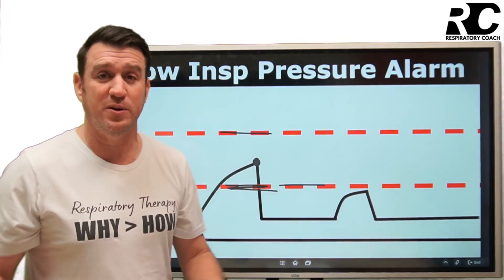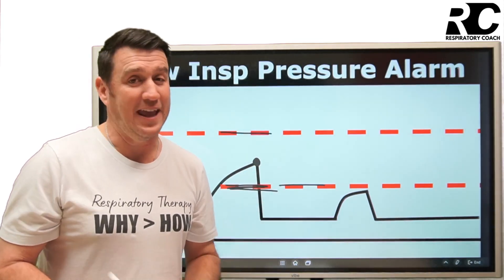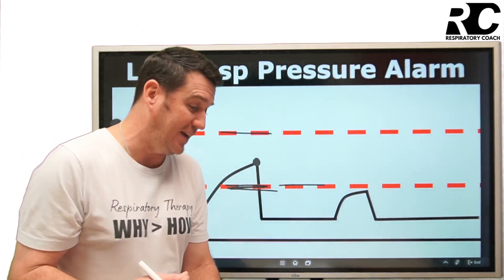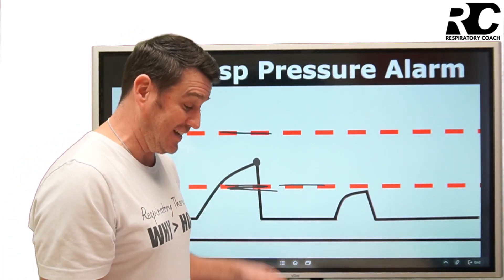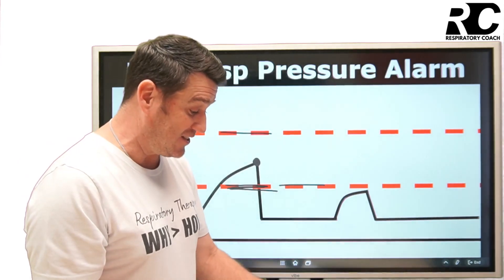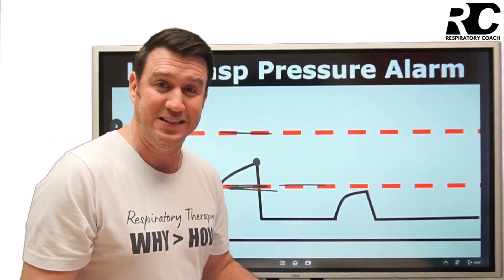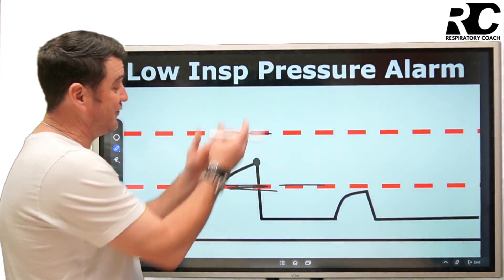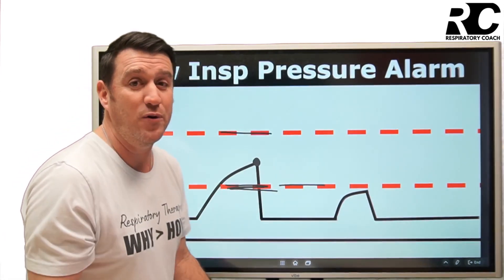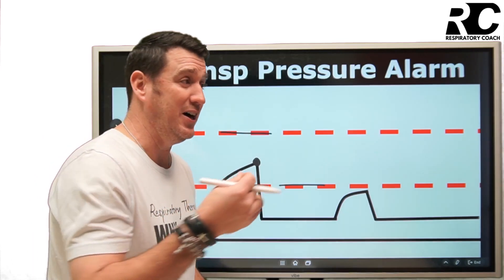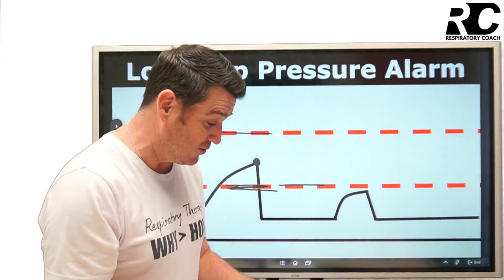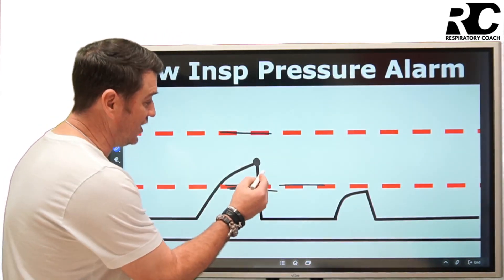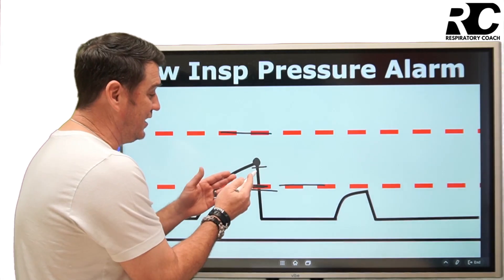So where should the low inspiratory pressure alarm be set? The answer depends on each and every one of your patients. According to Egan's, Chapter 46 in the 13th edition, the purpose of ventilator alarms is to bring events to the attention of the clinician. The purpose of setting the low inspiratory pressure alarm specifically is to notify you of a potential problem. The basic goal is to maximize true alarms and minimize false alarms.